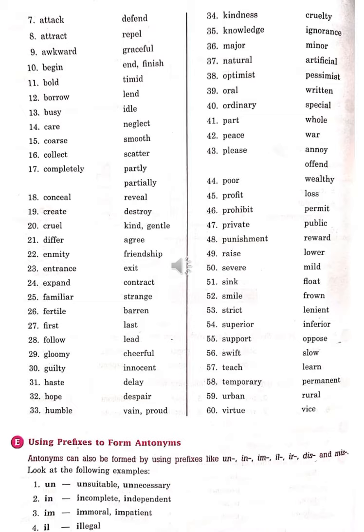Cruel (Nirday) – Kind (Dayalu), Gentle (Dayalu). Differ (Alag Kerna) – Agree (Sehemat Hona). Enmity (Dushmani) – Friendship (Dosti). Entrance (Parwesh) – Exit (Nikas).